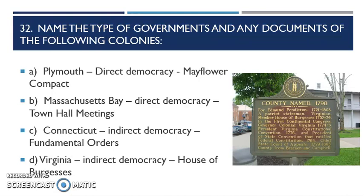Virginia is going to have an indirect democracy as well, and they're going to have the House of Burgesses. All these things are very important when we get into the Constitution and how our government is set up, because our founding fathers looked at what worked. This is what worked in the colonies — you've had this now for over 100 years. So when you're thinking about a government you would like, why not use these?